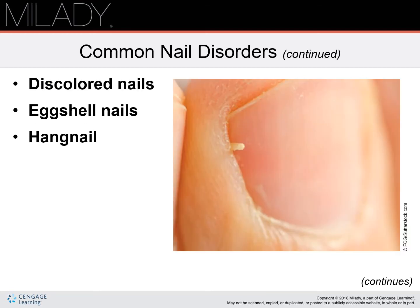Discolored nails are nails that turn a variety of colors, caused by surface stains from nail polish, foods, dyes, or smoking. They could also be caused by an internal discoloration of the nail plate due to biological, medical, or even pharmaceutical reasons. Eggshell nails are noticeably thin, white nail plates that are more flexible than normal. They are normally weaker and can curve over the free edge. Usually caused by improper diet, hereditary factors, internal disease, or medication. Be very careful when manicuring these nails because they are fragile and can break easily.